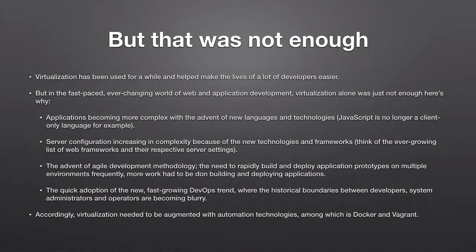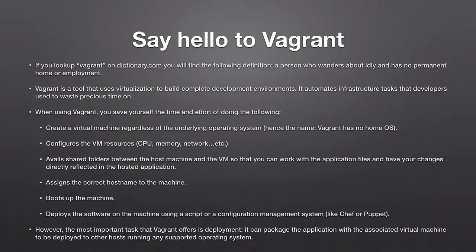For all those reasons we now have a new buzzword: DevOps — the combination of development and operations — which is blurring the lines between developers, system administrators, and operators. The developer should no longer rely solely on the system administrator to provide the infrastructure required to deploy and test the application. A new role, the DevOps engineer, can avail the required infrastructure, deploy the application, and start testing it. Accordingly, virtualization needed to be augmented with automation technologies, among which are applications like Docker and Vagrant. In the next lecture we'll start defining Vagrant, what it is, what it can do, and then jump into the installation process.